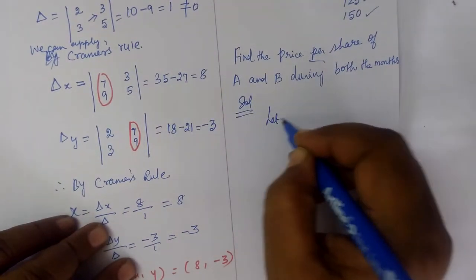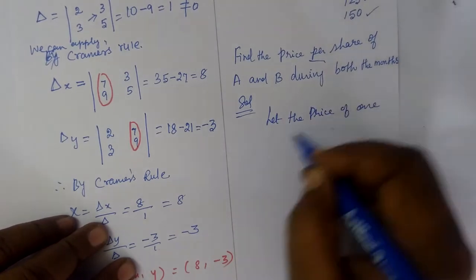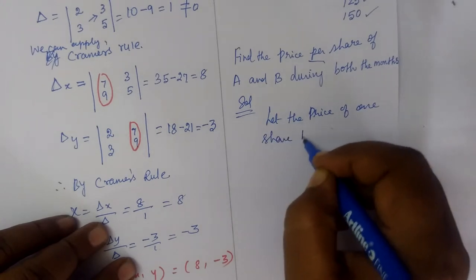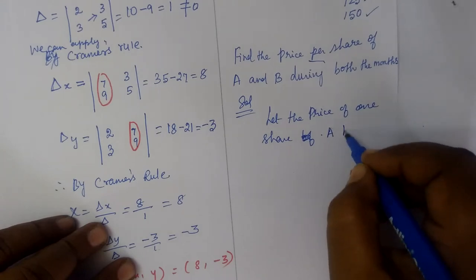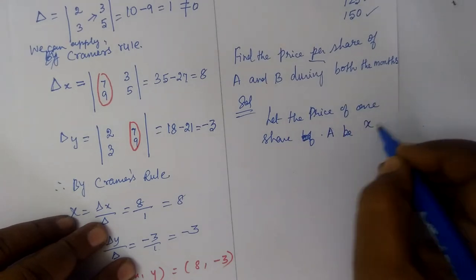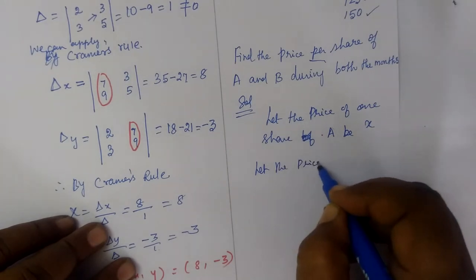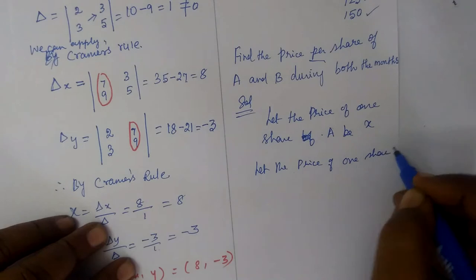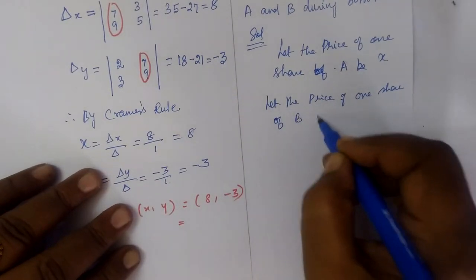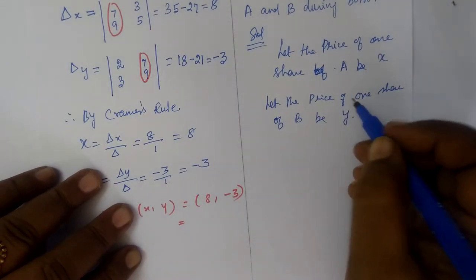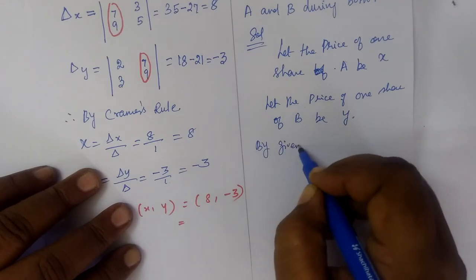Let the price of one share of company A be X. Then let the price of one share of company B be Y. By given data...